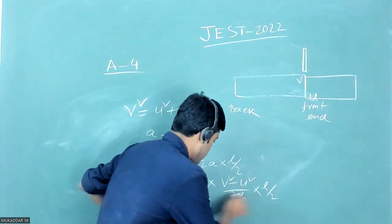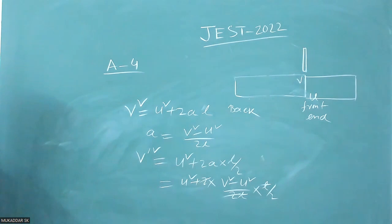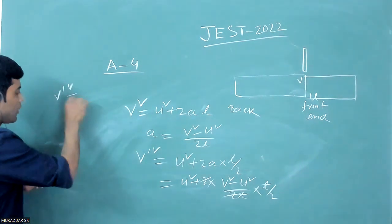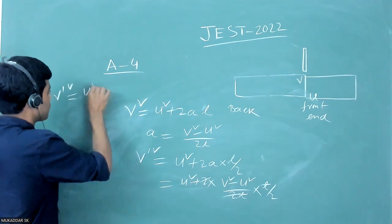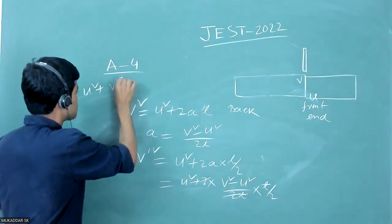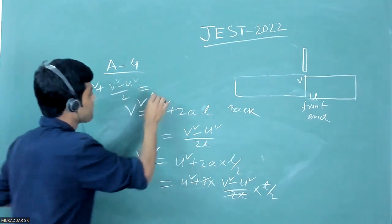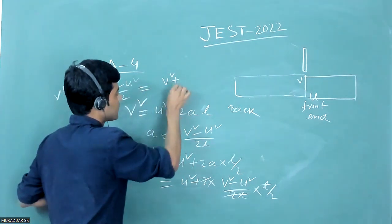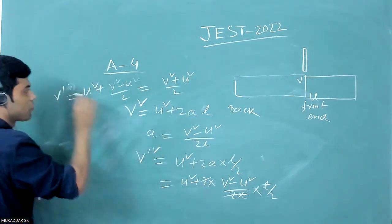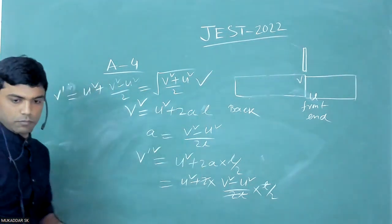The 2 and L cancel out, giving us v'² = u² + (v² − u²)/2, which simplifies to (u² + v²)/2. Therefore, v' equals the square root of (u² + v²)/2. Thank you.